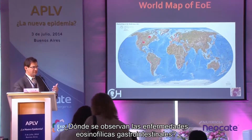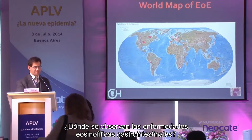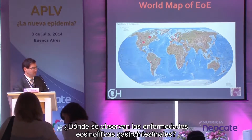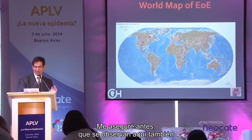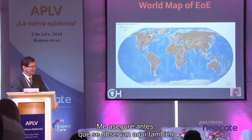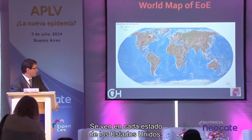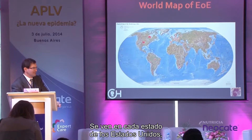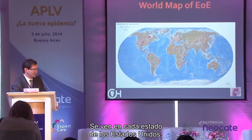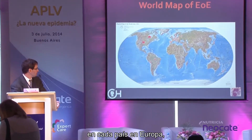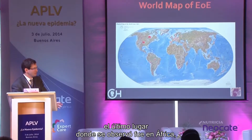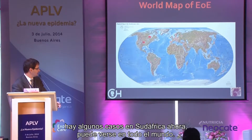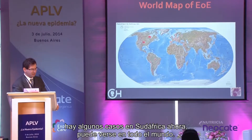Eosinophilic intestinal diseases are seen throughout the world — in every state in the United States, basically every country in Europe. The last place to be identified was Africa, and there are now some cases in South Africa. So it can be seen anywhere in the world.